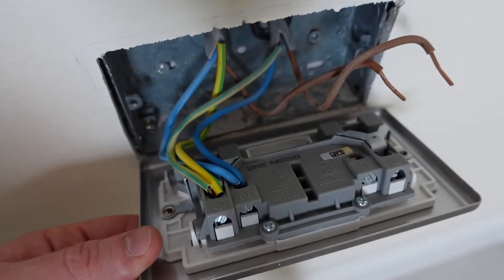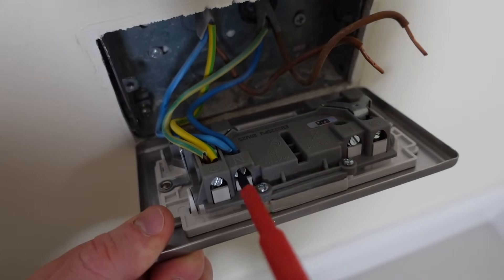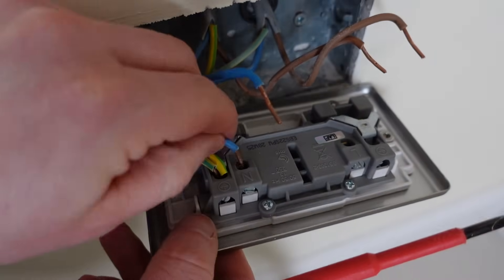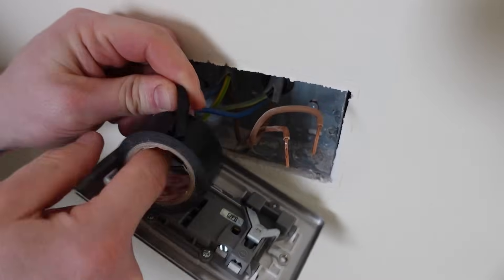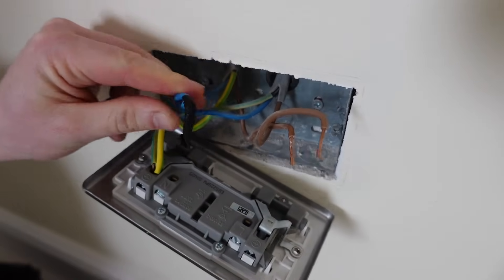Just leave those wires out of the way for now whilst we work on the others and then we will go ahead and undo the neutral, that's the blue ones, just move those out of the way for now. Just stick a little bit of tape around the neutral wires to stop the RCD from tripping.